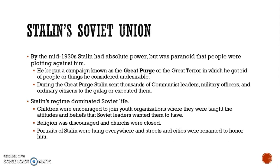By the mid-1930s, Stalin had absolute power but was paranoid that people were plotting against him. He started a campaign known as the Great Purge, or the Great Terror, in which he got rid of anyone he considered undesirable. During the Great Purge, Stalin sent thousands of Communist leaders, military officers, and ordinary citizens to the Gulag or had them executed. His regime dominated all of Soviet life — children were encouraged to join youth organizations where they were taught only the attitudes and beliefs Soviet leaders wanted them to have. Religion was discouraged and most churches were closed. Portraits of Stalin were hung everywhere, and streets and cities were renamed to honor him.